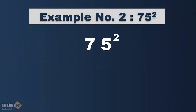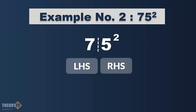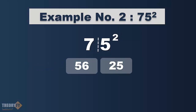Now we are going to find the square of 75. First split it. RHS will always be 25. Now to solve LHS, multiply 7 with its next number. The next number of 7 is 8. So 7 times 8 is 56, and that's our final answer: 5625.